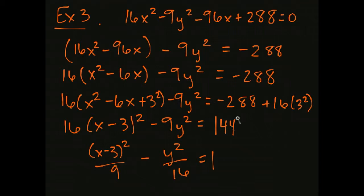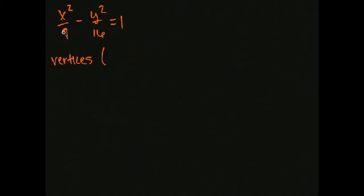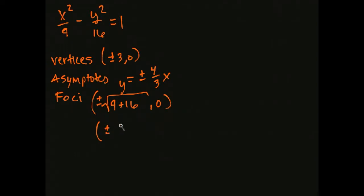In a degenerate case, we'd get 0 on the right-hand side rather than 1. Here the original non-shifted hyperbola is x squared over 9 minus y squared over 16 equals 1, shifted right 3 units. Since the positive term is on x, the vertices are at (±3, 0). The asymptotes are y = ±(4/3)x. The foci are at ±√(9 + 16) = ±√25 = ±5, giving foci at (±5, 0).